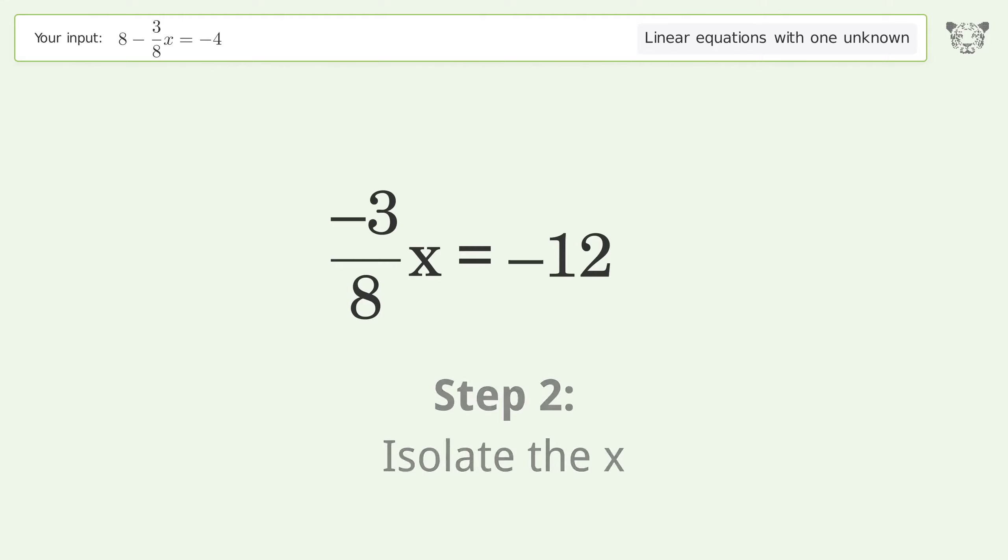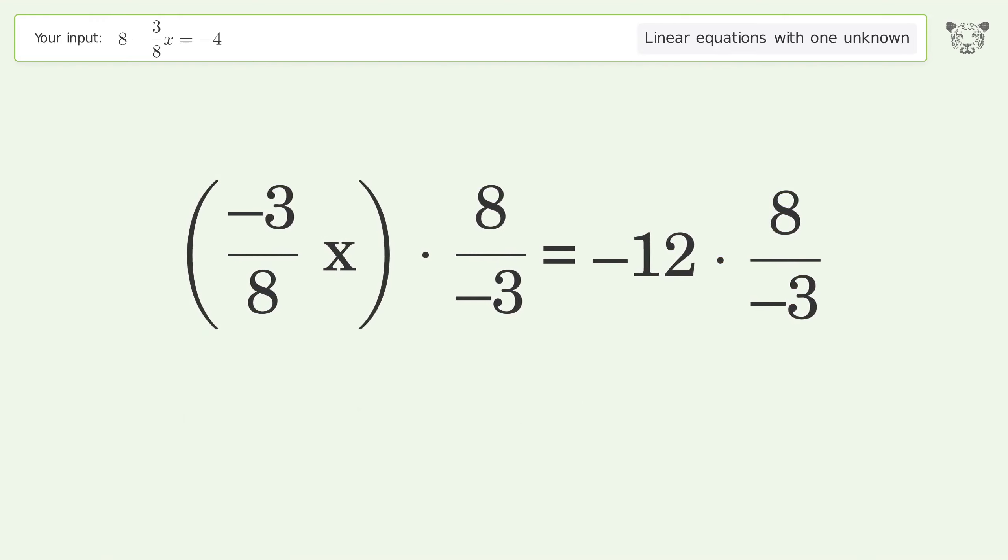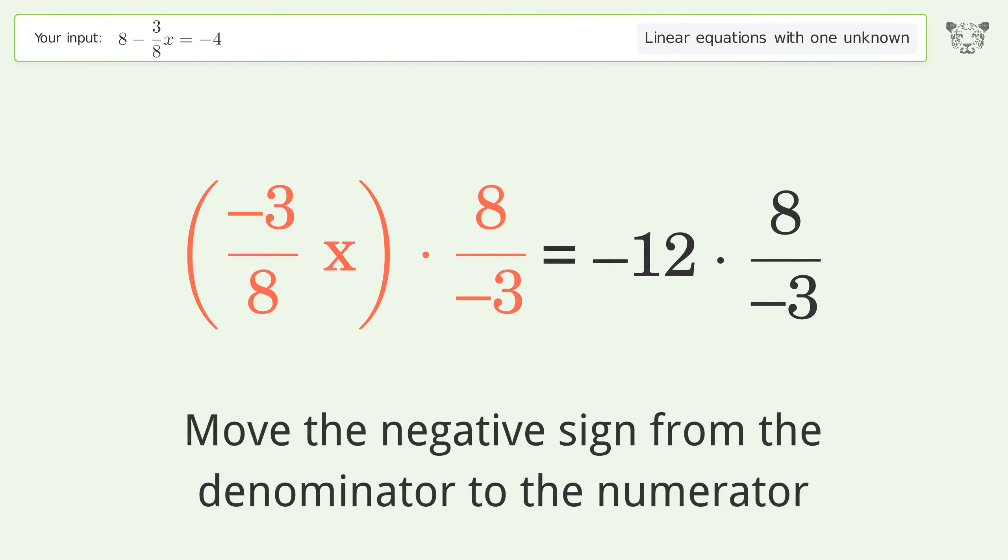Isolate the x. Multiply both sides by inverse fraction 8 over negative 3. Move the negative sign from the denominator to the numerator.